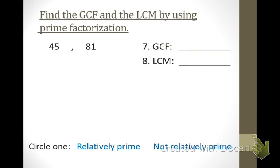Numbers 7 and 8 ask us to find the GCF and LCM using prime factorization. What does prime factorization mean? Upside-down division. Asia, help me with 45. Divide by 5 and get 9. The most that goes into 9 is 3 — divide by 3 and get 3. Is 3 a prime number? Yes. So I'm finished with 45.